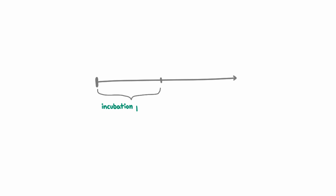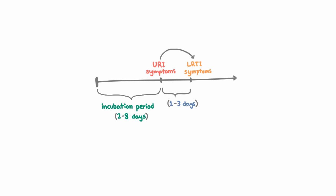Now once you're infected, there is an incubation period of two to eight days. And after upper respiratory tract infections, it takes one to three days to get lower respiratory tract infections. We presume that RSV gets from the upper to the lower respiratory tract by either aspiration or intercellular transmission.